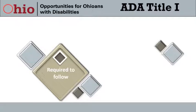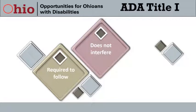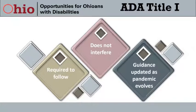How does an employer know which guidance to follow and what takes precedence? Employers continue to have responsibilities under Title I during a pandemic. However, Title I does not interfere with employers following the guidance and suggestions from the CDC and state and local public health authorities. These entities have been updating their guidance as the pandemic evolves, so it's a good idea to review the guidance often to remain current.